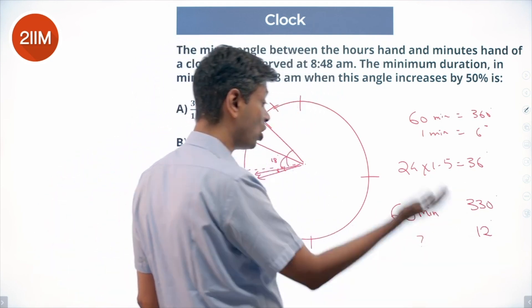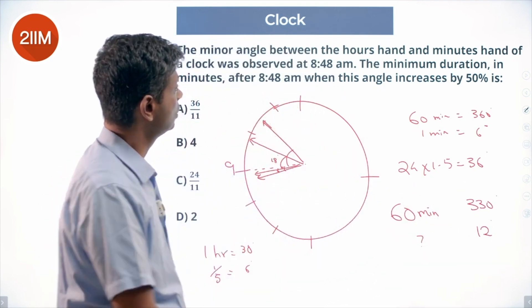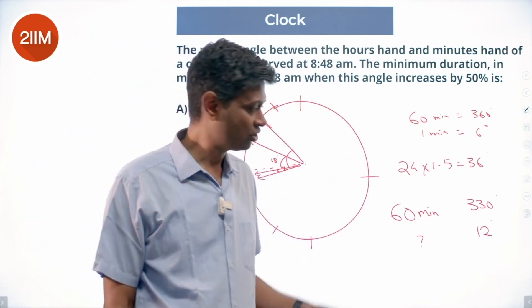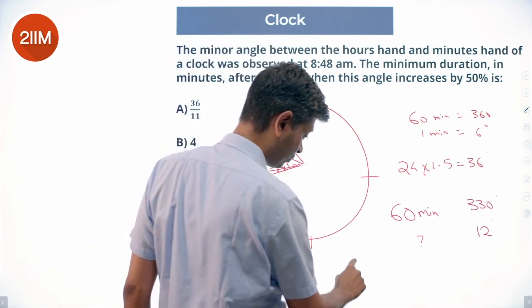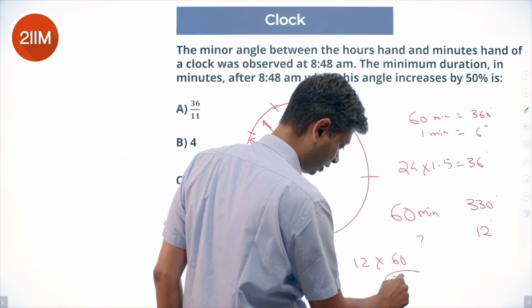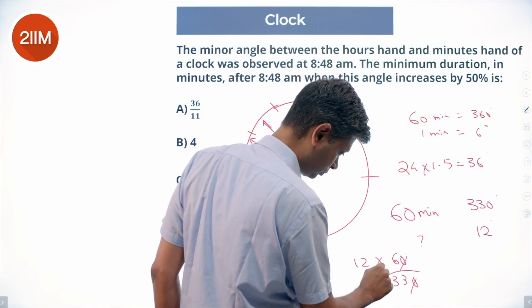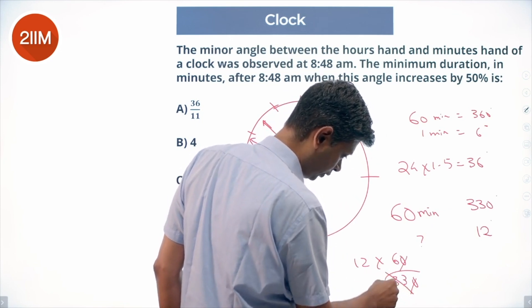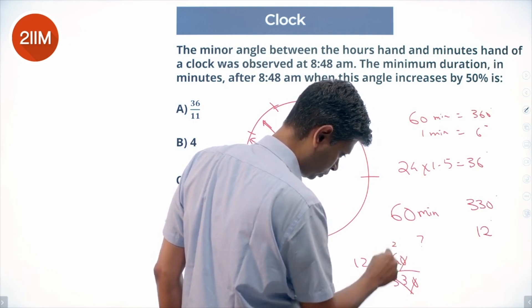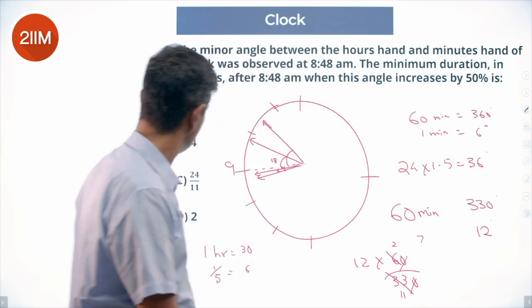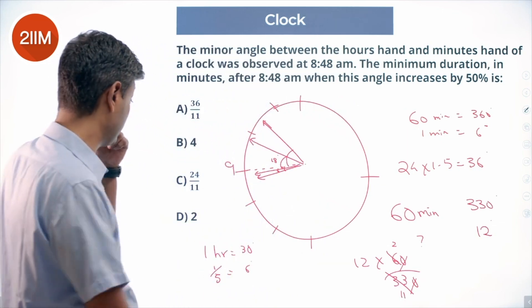That is our time. This is our time beyond 8:48. The minimum duration in minutes after 8:48, that is exactly what we need to find. Our answer is this number: 12 times 60 by 330. Divide this by 2, this is 2, this is 11. 12 times 2 by 11, 24 by 11 minutes.